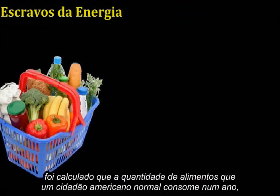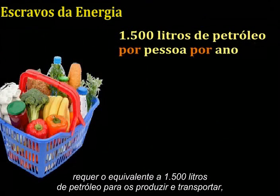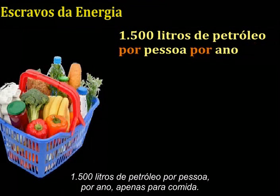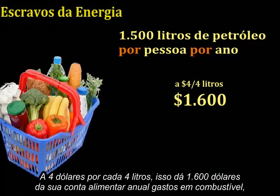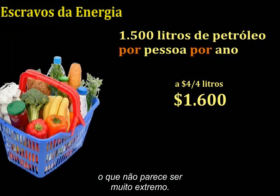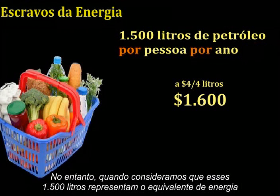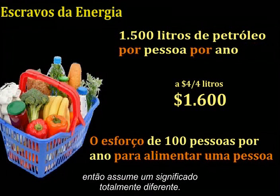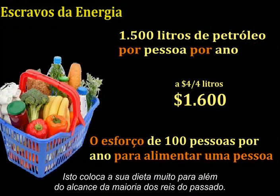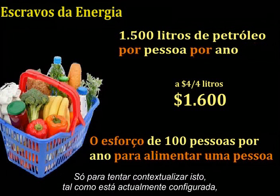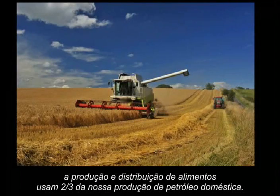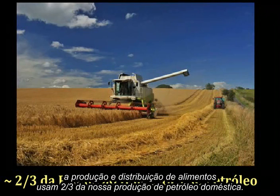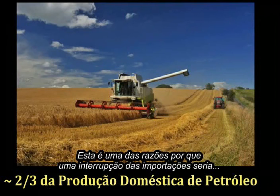Here's another example. It has been calculated that the amount of food that the average North American citizen consumes in a year requires the equivalent of 400 gallons of petroleum to produce and ship. At $4 a gallon, that works out to $1,600 of your yearly food bill being spent on fuel. However, when we consider that those 400 gallons represent the energy equivalent of 100 humans working year-round at 40 hours a week, it takes on an entirely different meaning. This puts your diet well out of the reach of most kings of times past. As it is currently configured, food production and distribution uses fully two-thirds of our domestic oil production — one reason why a cessation of imports would be, shall we say, disruptive.